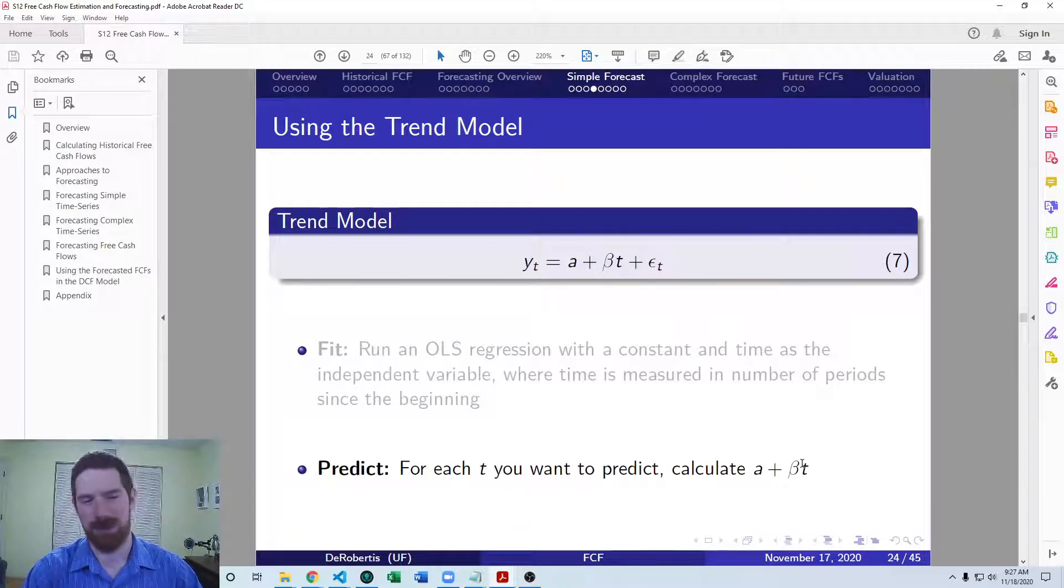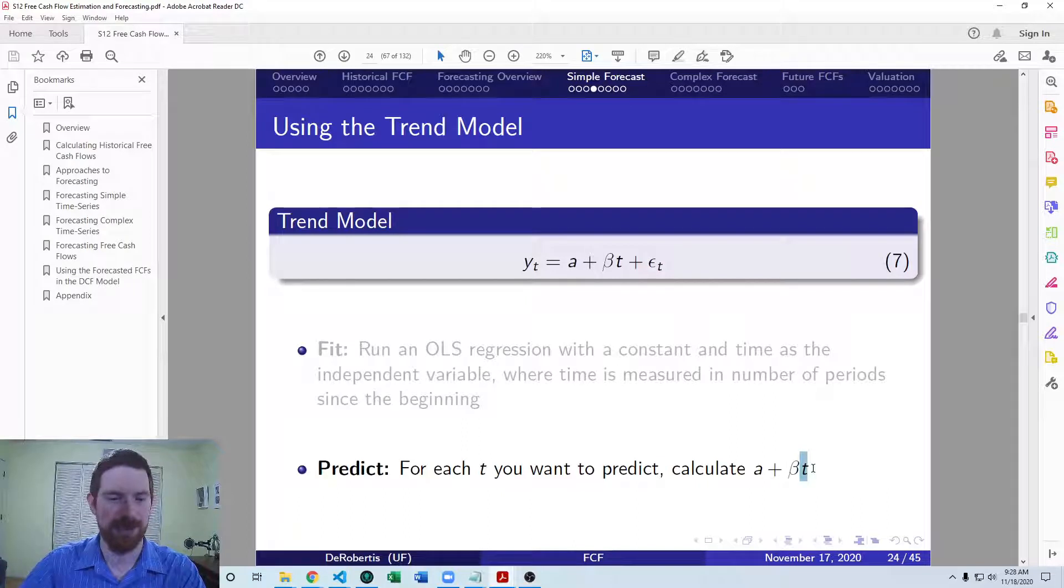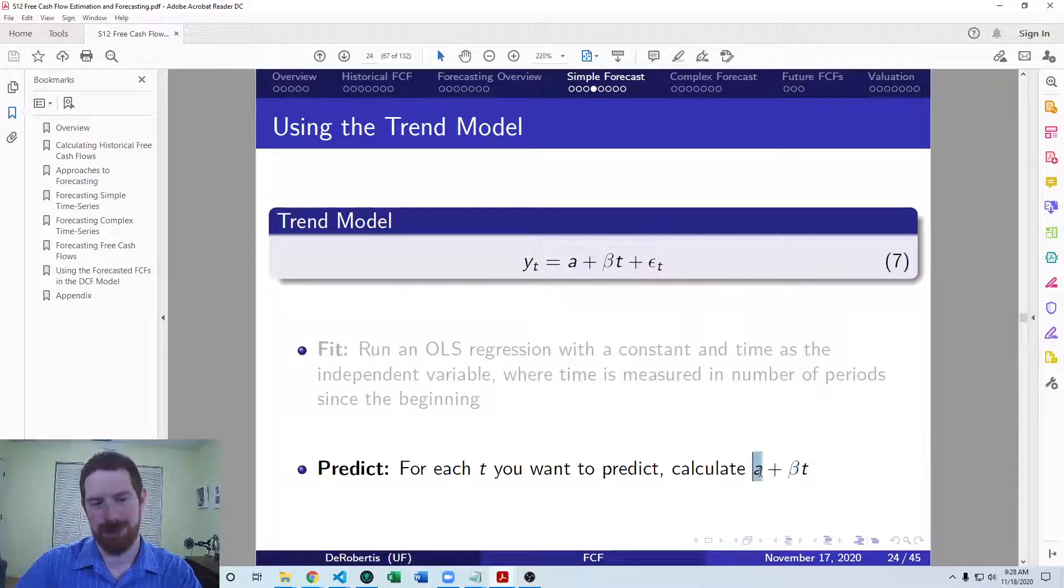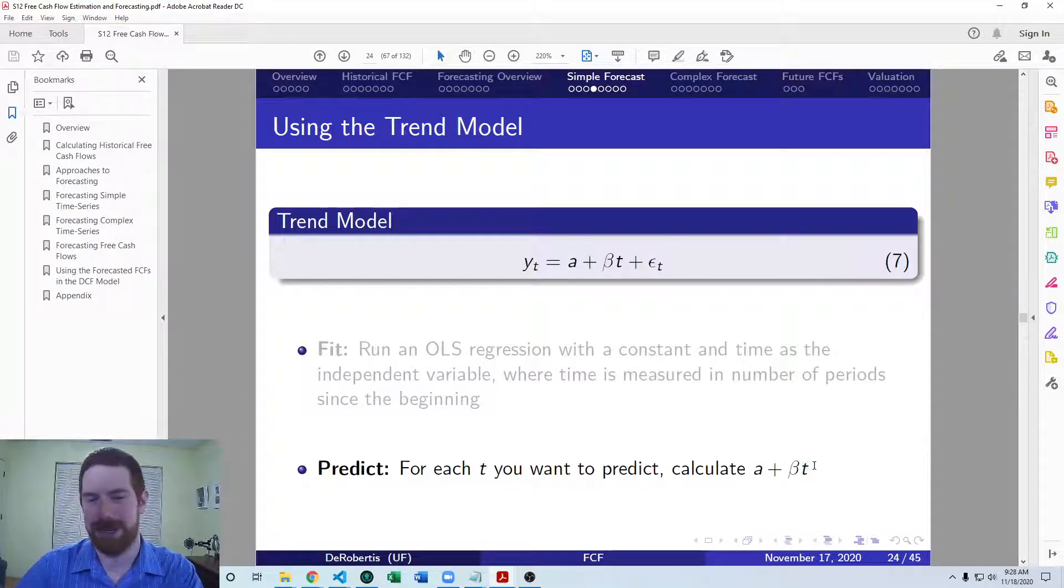So if you had five historical periods, those might be one, two, three, four, five as t in your regression, then you want to forecast one period in the future, that's going to be period six. So you're going to plug in six for t here and the estimated coefficient and intercept. Then you want to predict the next period, you're going to plug in seven, period after that plug in eight, and so on. This is able to capture a linear trend up or down in the data.